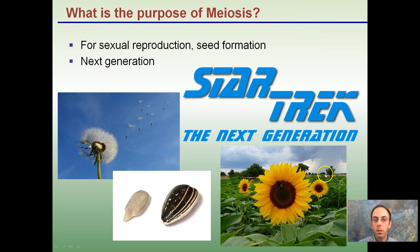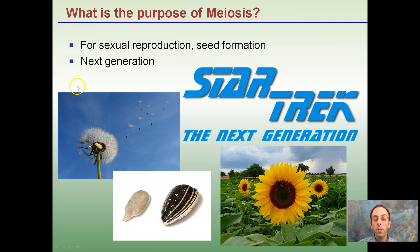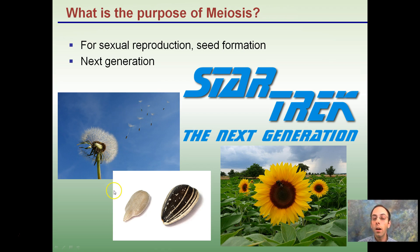The purpose of meiosis is sexual reproduction. For plants, it enables seed formation to get to the next generation by spreading genes to produce pollen grains, immature seeds, and ultimately a new plant or a new person.